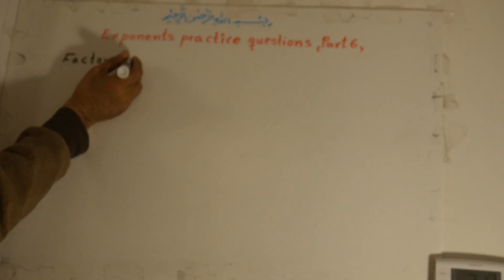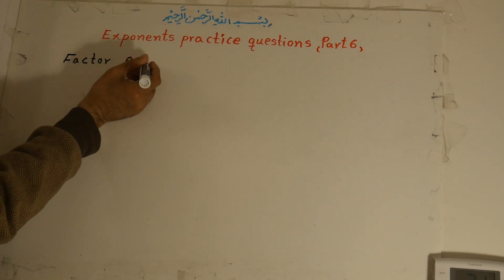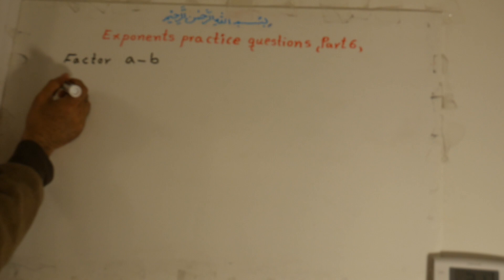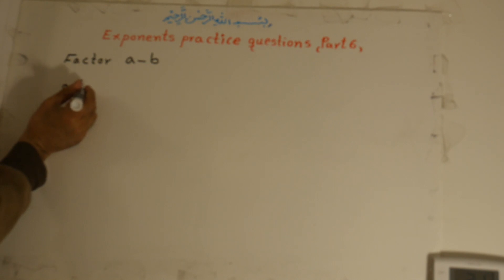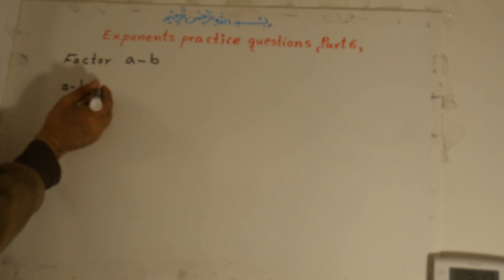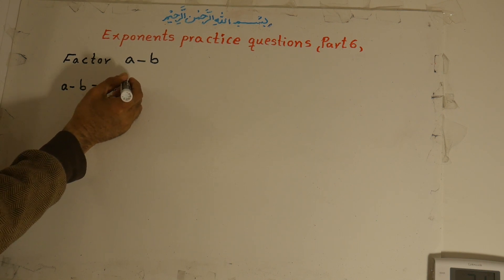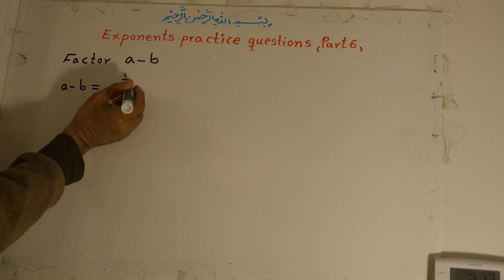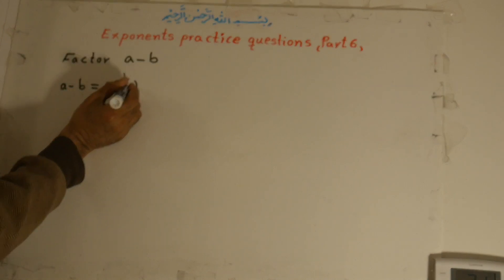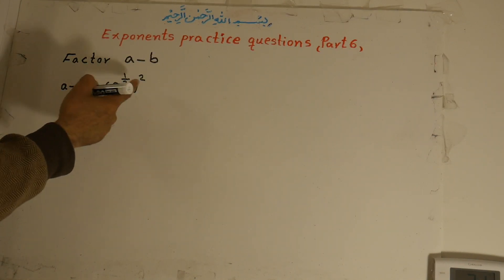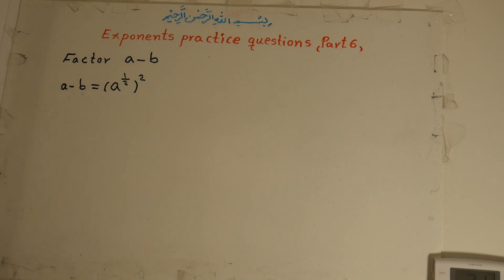How can we factor (a minus b)? We can write (a minus b) as a to the power of one-half, all to the power of two. There is no change because one-half times two equals two-over-two, which equals one.